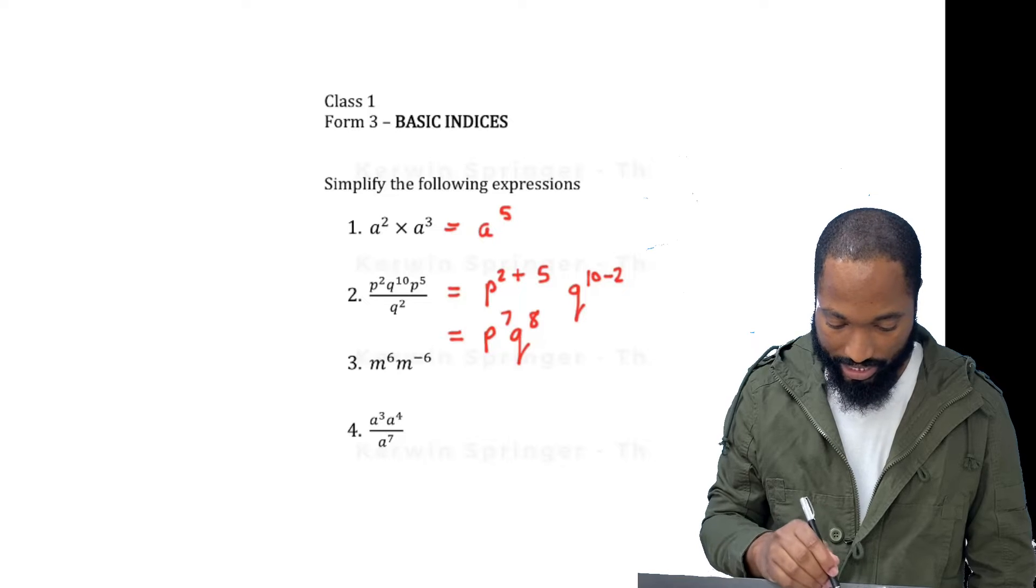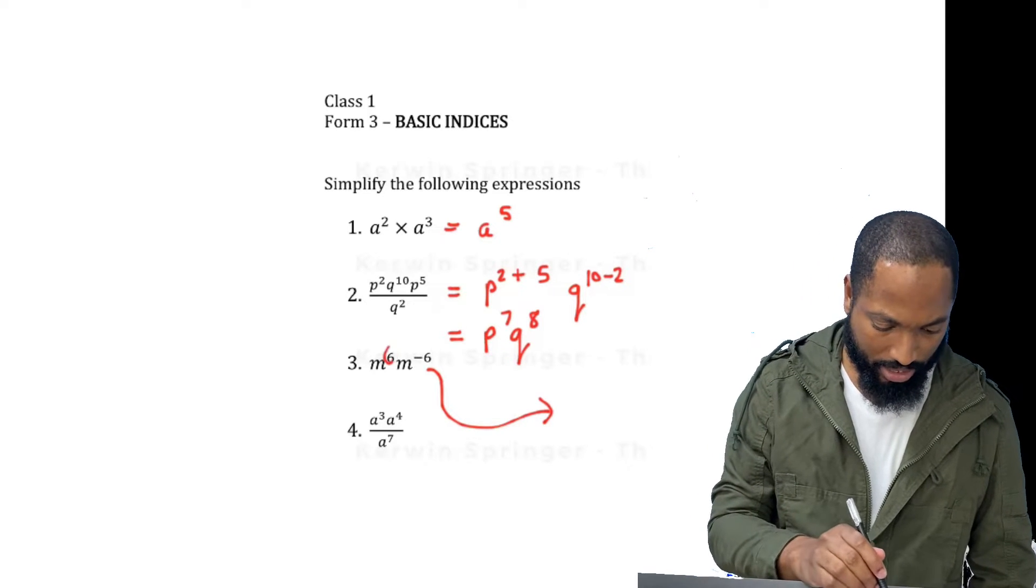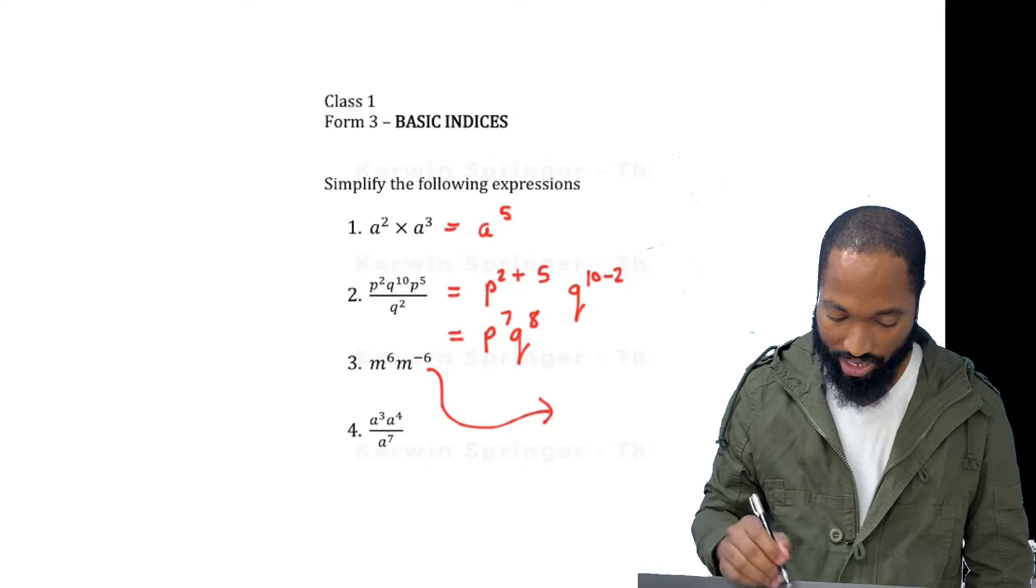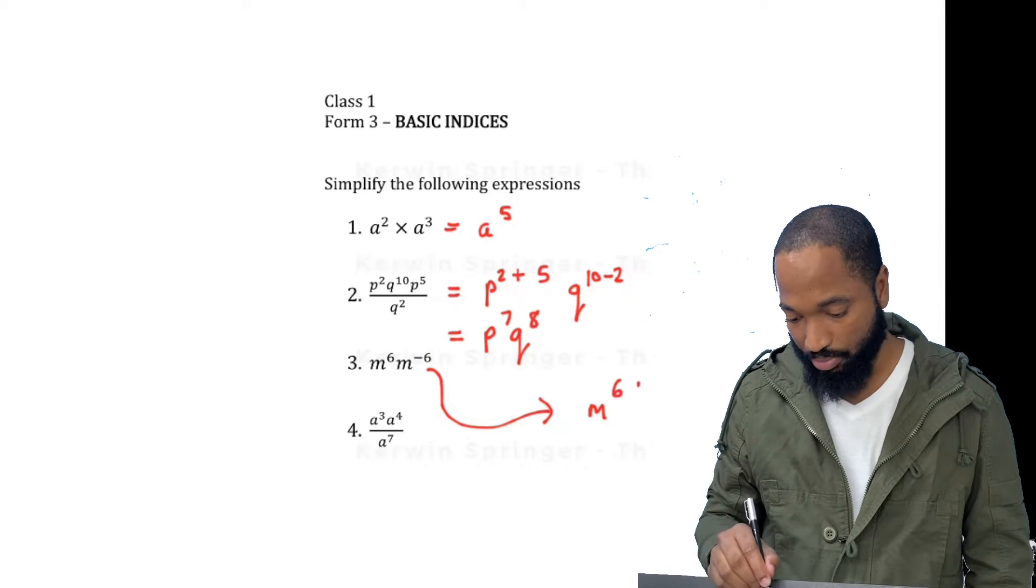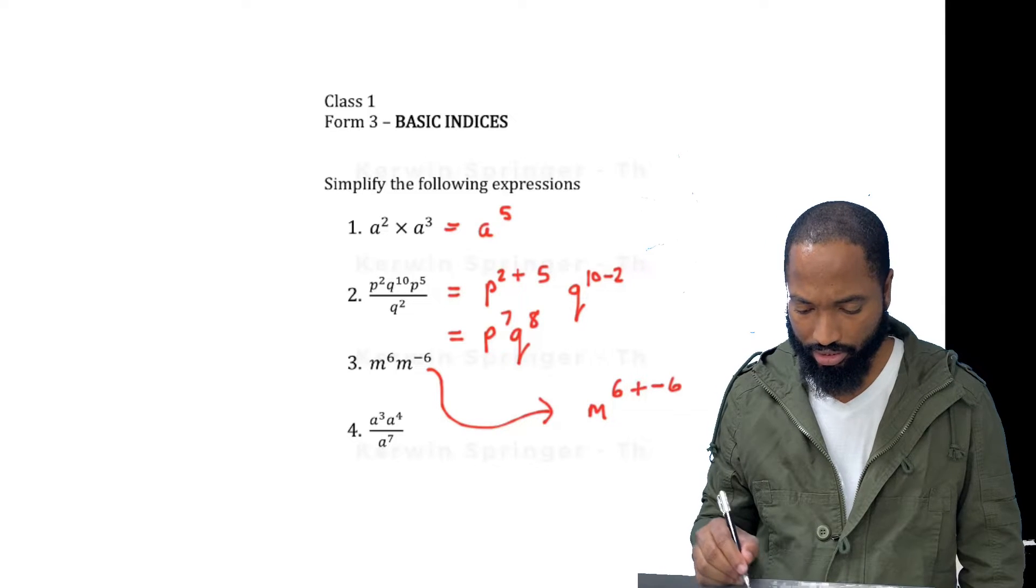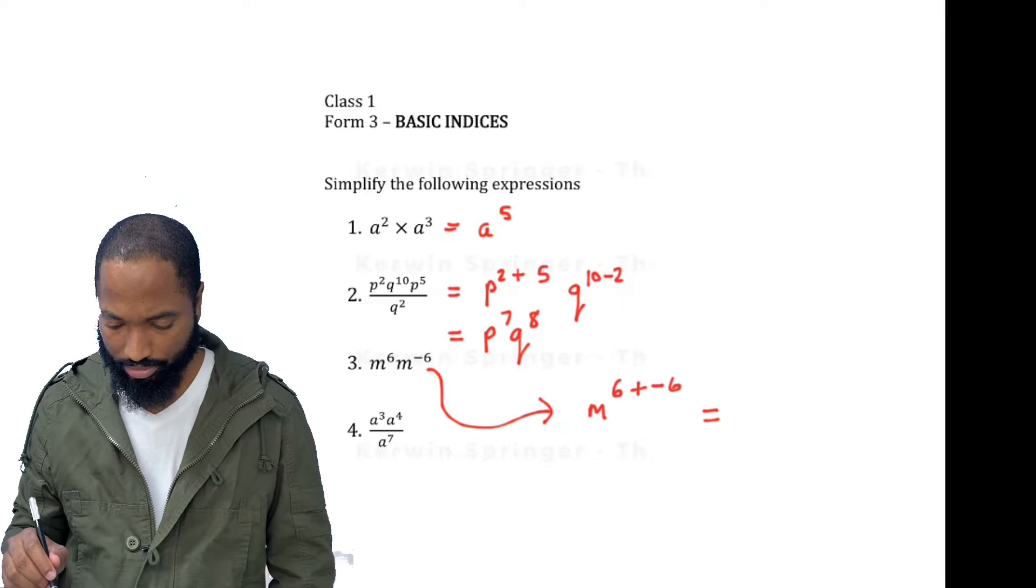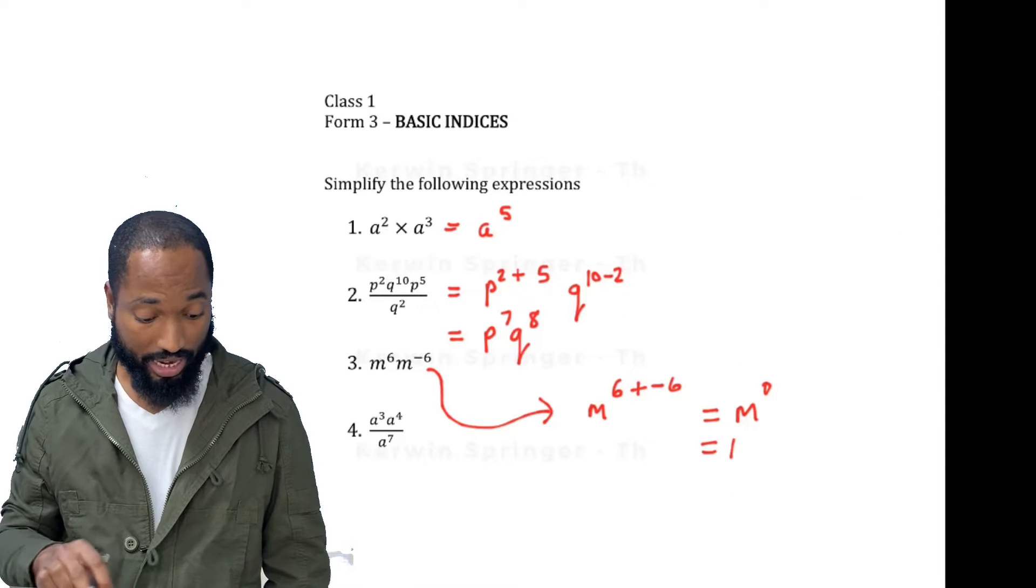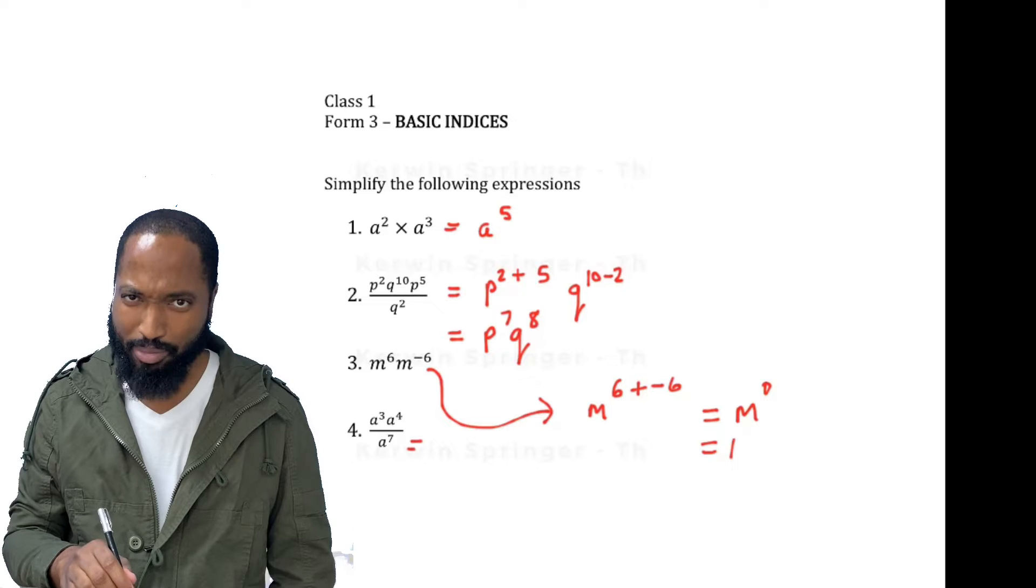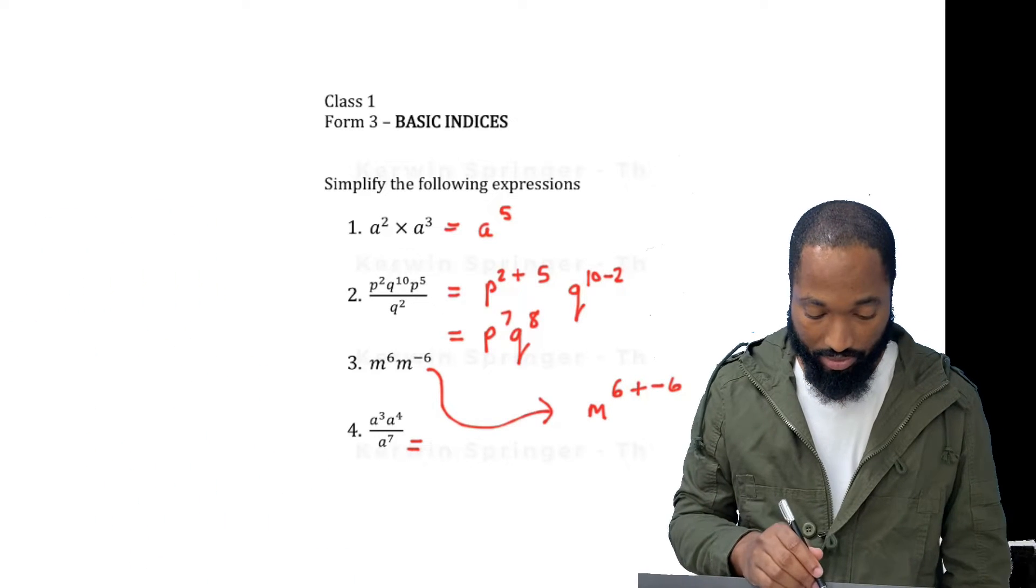This homework is from the last class. We don't really have space for this one. Let me squeeze this here. You're multiplying by different signs. So this is really M to the power of 6 plus negative 6, M to the power of 0, which is 1. We learned that last class. We're inside.